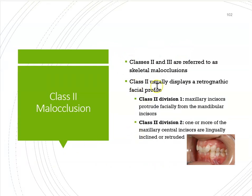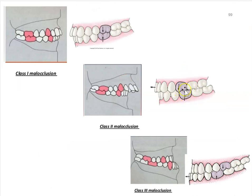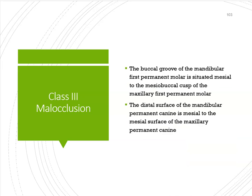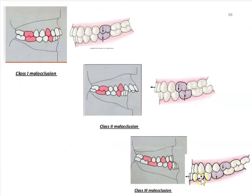In Class 2 occlusion, the mesial buccal groove is distal to the mesial buccal cusp. There can be Division 1 or Division 2. Division 1 is when the maxillary incisors protrude facially. Division 2 is when the maxillary central incisors are retruded or inclined lingually. Class 3 is when the mesial buccal groove is mesial — ahead of the mesial buccal cusp of the maxillary first molar.